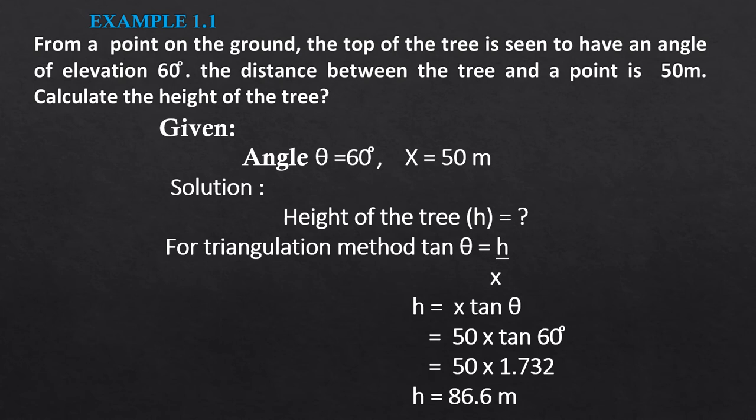Now we write the given data separately. Theta equals 60 degrees, the angle of elevation is 60 degrees which we calculate in its tan value. X is the distance between B and C, which is 50 meters. Now we have to calculate h by using our formula h equals x tan theta, which we got from tan theta equals h by x.